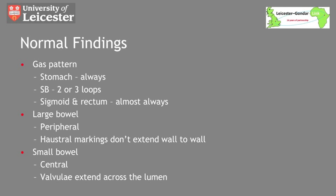The next important step is to know the difference between the appearance of large and small bowel. The large bowel tends to sit around the edge of the abdomen and the haustral markings do not extend the whole way across the lumen, whereas small bowel tends to sit more centrally and the valvulae extend across the whole lumen, giving the appearance of a line going across the lumen.